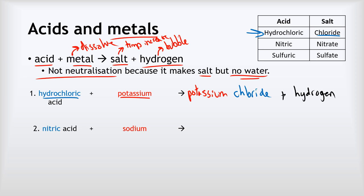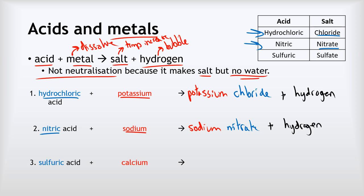Second example: nitric acid reacting with sodium. The sodium gives us the cation — it's going to be sodium something. Nitric acid produces nitrate salts, so this will be sodium nitrate, and we also produce hydrogen. Last example: sulfuric acid reacting with calcium. Calcium gives us the cation, sulfuric acid makes sulfate salts, so our salt will be calcium sulfate, and again we make hydrogen rather than water.